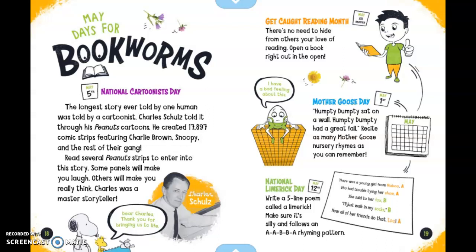May 1st is Mother Goose Day. 'Humpty Dumpty sat on a wall, Humpty Dumpty had a great fall.' Recite as many Mother Goose nursery rhymes as you can remember. And we see Humpty on that wall saying, 'I have a bad feeling about this.'